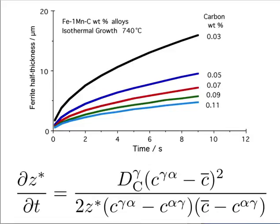That does not make sense because we have never seen ferrite grow at an infinite rate even in zero-carbon iron. What happens is other rate-controlling processes take over, for example the transfer of atoms across the interface. The theory that we have done is purely for when growth is controlled by diffusion - you will never get infinite growth rates, but they will become much more rapid when the carbon concentration in your alloy approaches the solubility of carbon in ferrite.